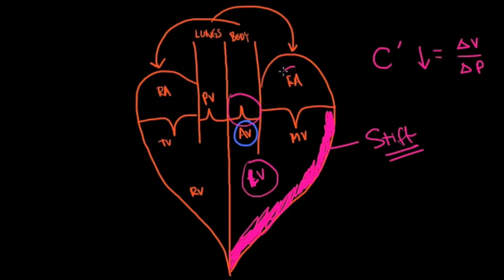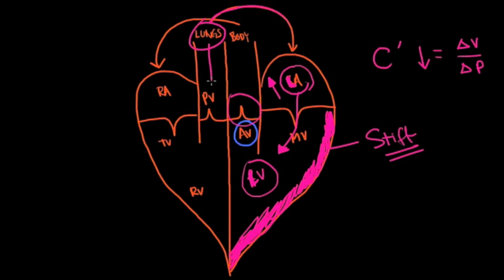Because the left ventricle is so stiff, the left atrium needs to fill it, and the pressure in the left atrium will also go up. That pressure is transmitted back to the lungs, and if unchecked, it goes to the right ventricle, to the right atrium, and systemically back to the body, producing systemic venous hypertension.